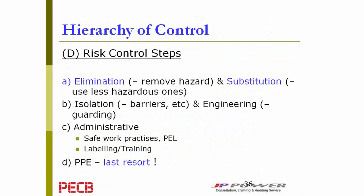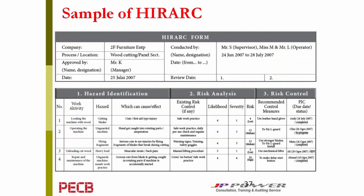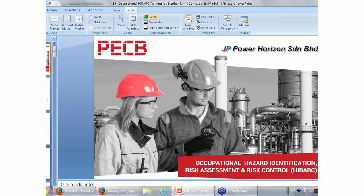PPE is always a last resort. Here is an example of a HIRAC form. The form is divided into three sections: hazard identification, risk analysis (RA), and risk control (RC). This is just a sample — many organizations have their own formats and their own ways of assessment. However, no matter how customized, the methodology of HIRAC must be followed. Thank you very much for listening — over to you, Susana.